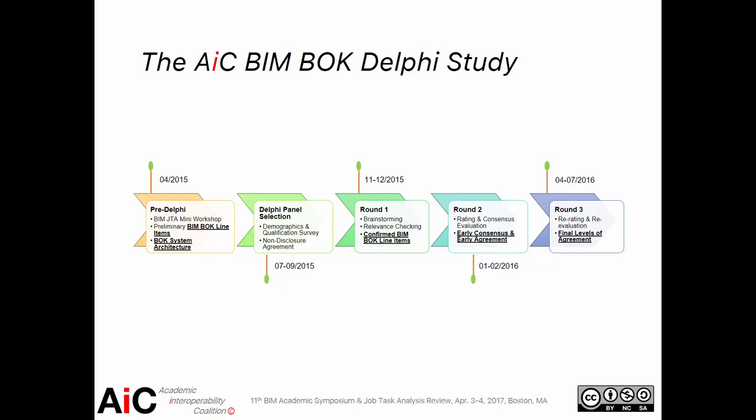In round three, all BIM Body of Knowledge line items that did not accomplish early consensus or early agreement were re-rated and re-evaluated for consensus. After round three, we found the results were pretty consistent, so we finished the Delphi study at round three, which produced the final levels of agreement and some comprehensive descriptive statistics for the BIM Body of Knowledge line items.